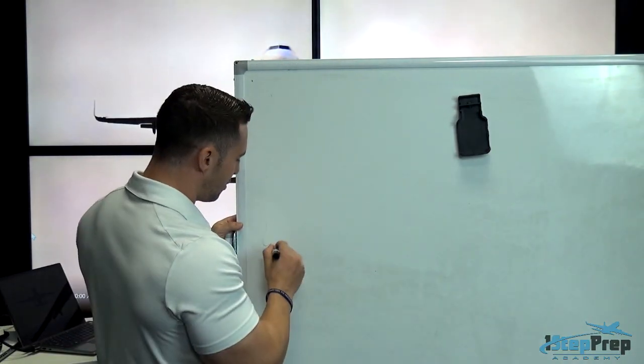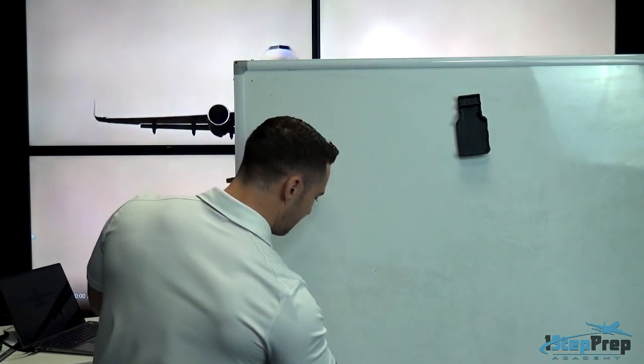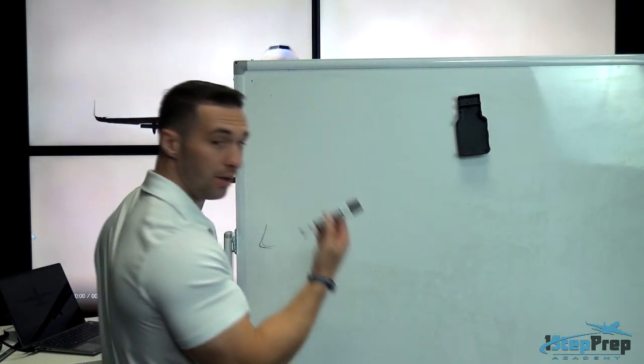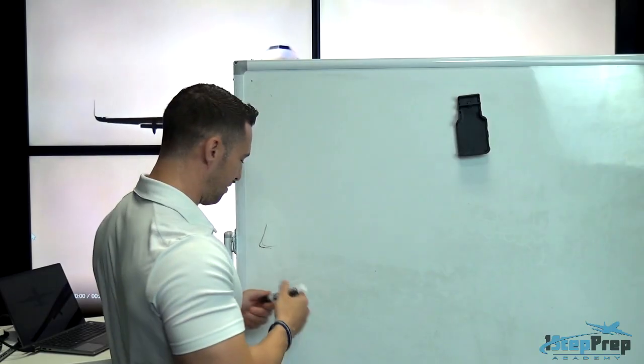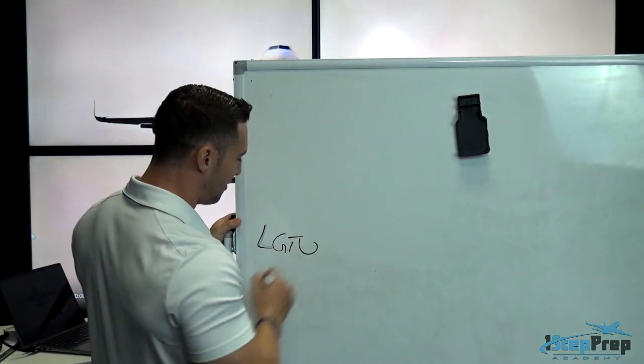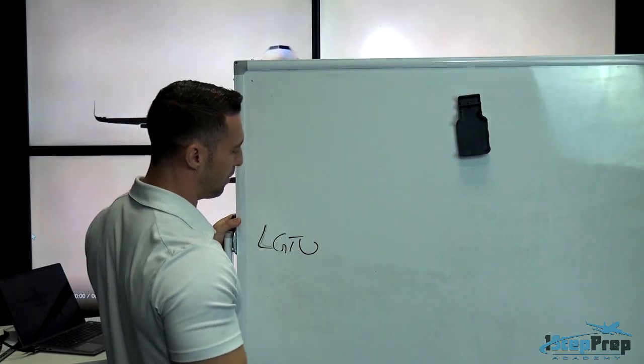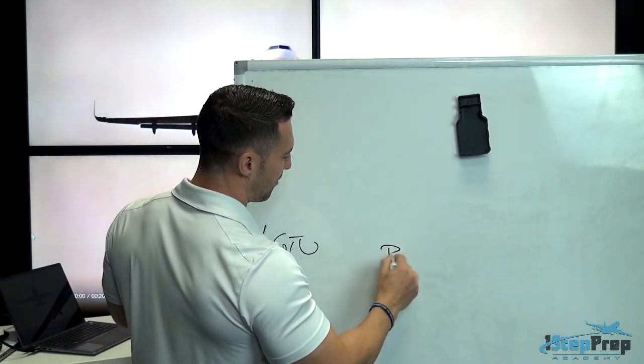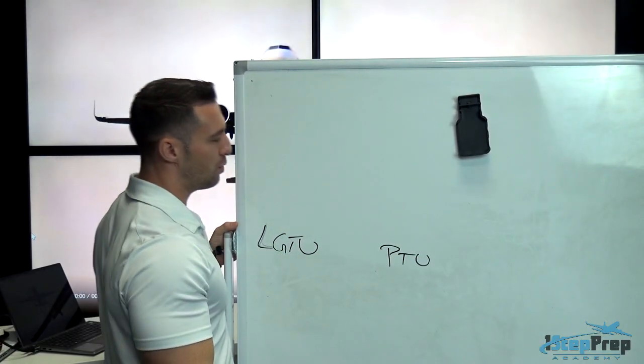We have the landing gear transfer unit in the case of, speaking of critical failure, an engine that fails. Landing gear transfer unit, we always have a backup. It's installed in the Boeing 737NG, and we have a power transfer unit installed in the 320.